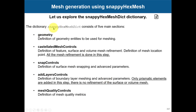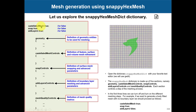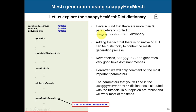The snappyHexMesh dictionary located in the system directory is divided into five main blocks: geometry (read the geometry, can be multiple STLs), castellation (all mesh refinement is done here), snapControls (body-fitted mesh), addLayers (prismatic layer addition), and meshQualityControls. At the beginning, you have options to disable snap and addLayers and work only on castellation, then enable them progressively when satisfied.